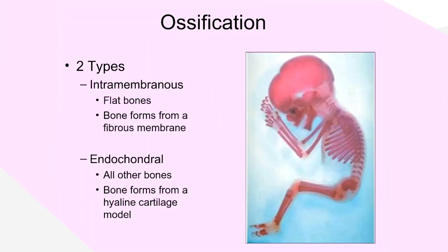In this video we're going to talk about ossification, which is the term we use for formation of bones. Looking at this picture of a fetus that is forming, the process of ossification actually begins in utero and starts at about eight to nine weeks of pregnancy. It's actually the formation of bone that causes us to go from calling a developing baby an embryo to calling them a fetus. The fetal stage begins when we start to see bones being produced, when ossification starts happening.